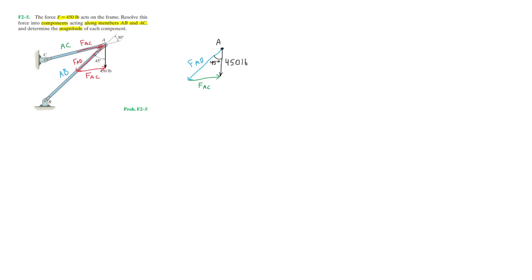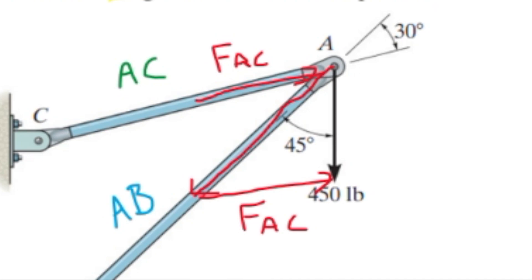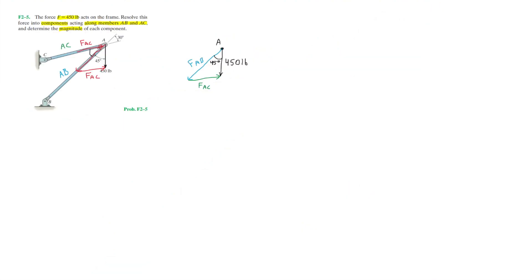Now for force AC, we're given a 30 degree angle, which is projected from member AB. As you can see in the section between member AC and AB, we have a pair of vertical angles. So that inner angle there will also be 30 degrees.